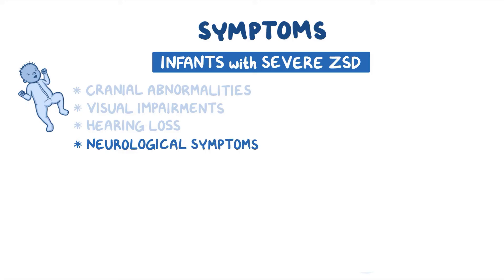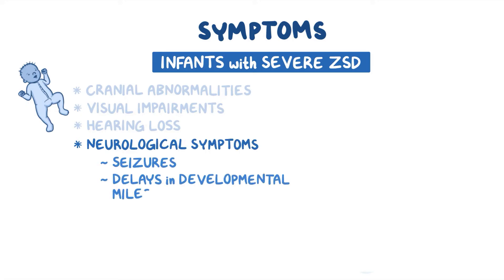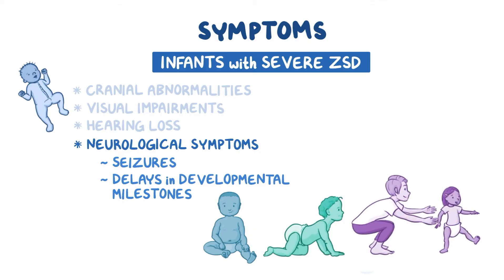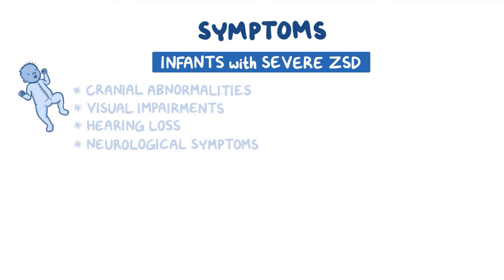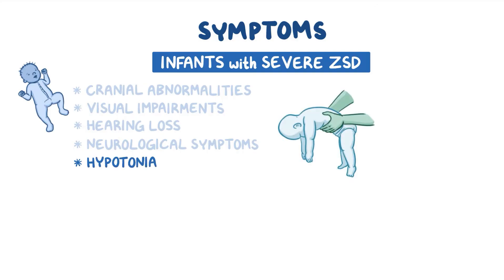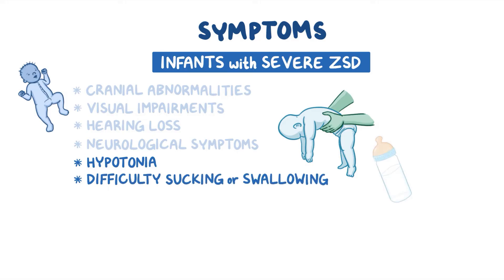Neurological symptoms may include seizures and delays in developmental milestones like sitting, crawling, or walking. Other symptoms include a lack of muscle tone, called hypotonia, and affected children may appear limp and lethargic. Infants may have difficulty sucking or swallowing, causing problems in feeding and gaining weight.